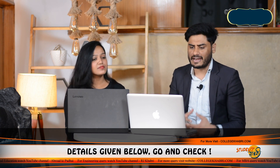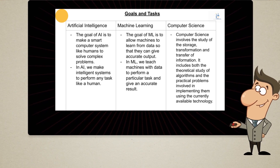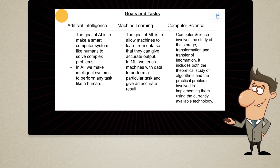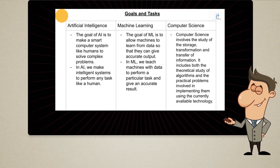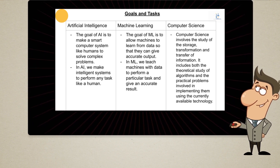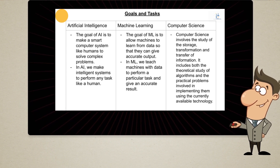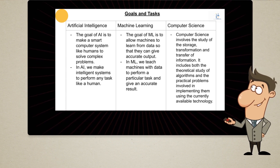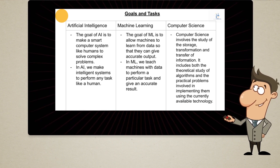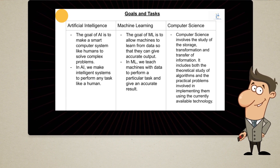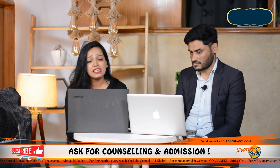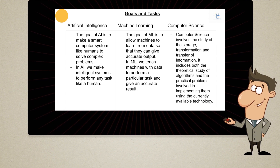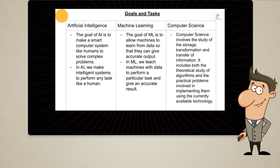The most important part is the goal and task — what does all this work mean? The goal of AI is to make smart computer systems like humans to solve complex problems. In AI, we make intelligent systems to perform any task like humans. In machine learning, machines are allowed to learn from data — the data created by humans is analyzed so that the system becomes smart enough to provide accurate output.